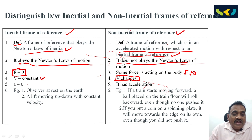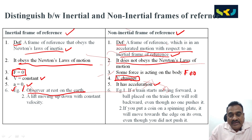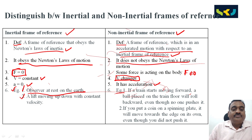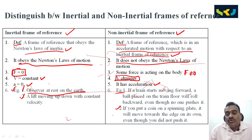Examples for inertial: observer at rest on the Earth; a lift moving up and down with constant velocity. Examples for non-inertial: if a train starts moving forward, a ball placed on the floor will roll backward even though no one pushes it; if you put a coin on a spinning plate, it will move towards the edge even though you did not push it.